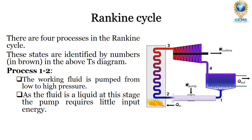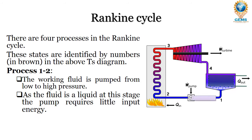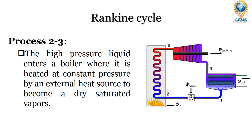In process 1 to 2, the pressure is increasing — the fluid is pumped from low pressure to high pressure, that is from the condensate to the inlet of the boiler.